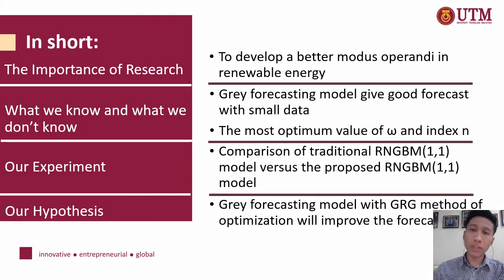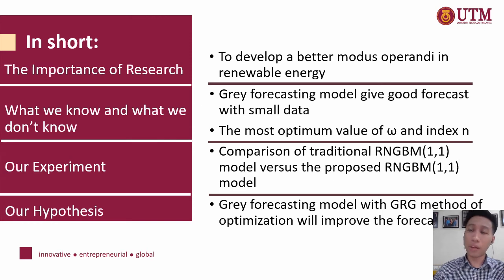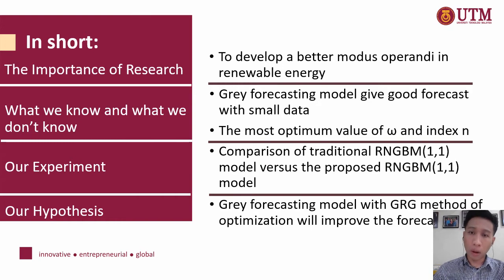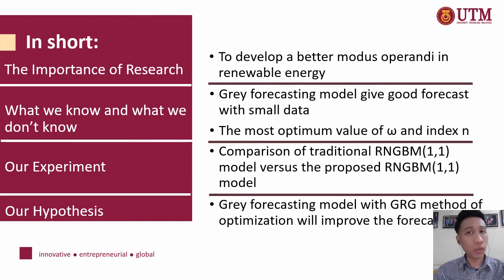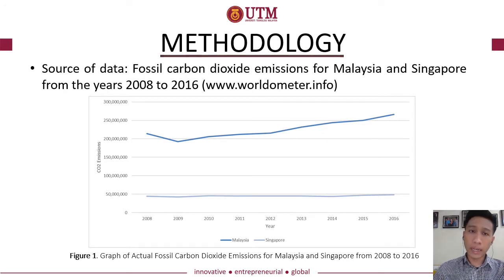In short, the importance of this research is to develop a better modus operandi in renewable energy. The gray forecasting model gives a good forecast given a small size of data, but what is not yet known is the most optimum value of epsilon and the value of index n in the generation of the B matrix factor. Our experiment compares the traditional gray forecasting model against the proposed gray forecasting model with GRG non-linear optimization. Our hypothesis is that the gray forecasting model with GRG will improve the forecast.